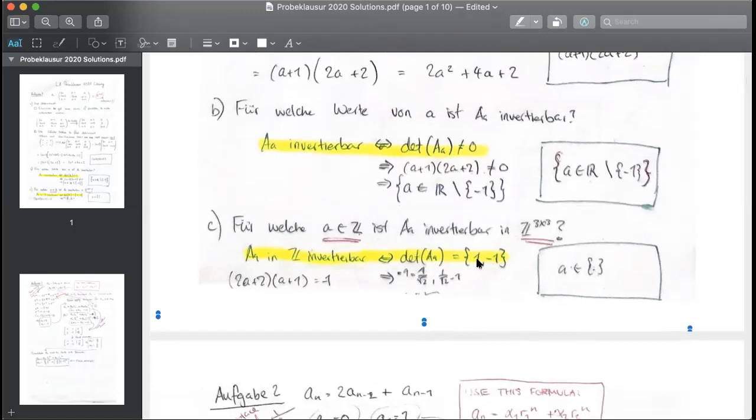So that means there is no integer value for A that makes the determinant equal to one or minus one. So A is the member of nothing.